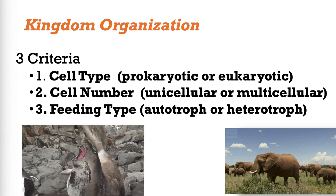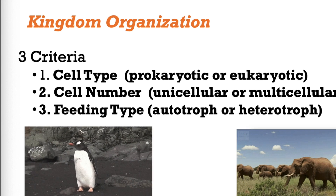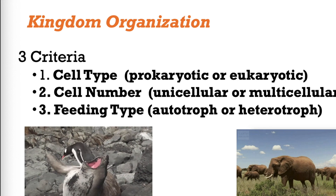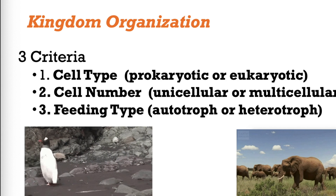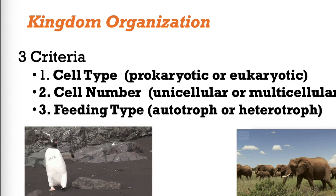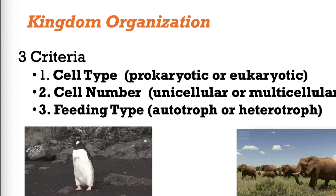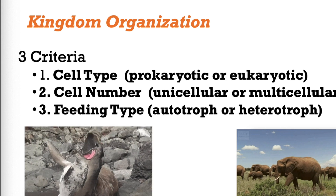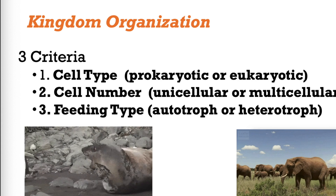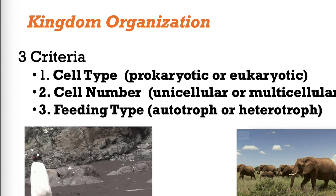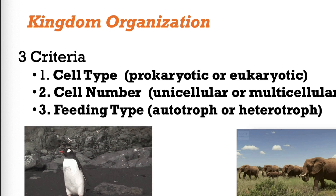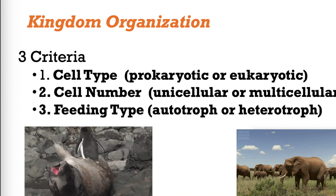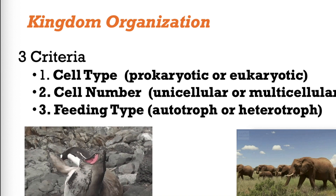First, what is their cell type? We need to recall from the cell unit the difference between a prokaryote and a eukaryote. Eukaryotes have a nucleus, whereas prokaryotes do not — such as bacteria. Second criteria is cell number: are these organisms made of one cell or millions of cells — unicellular versus multicellular? And the third criteria is their feeding type: are they autotrophic or heterotrophic?